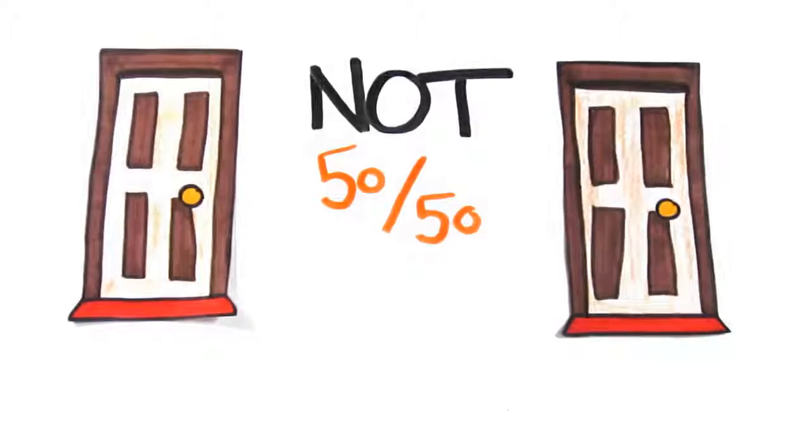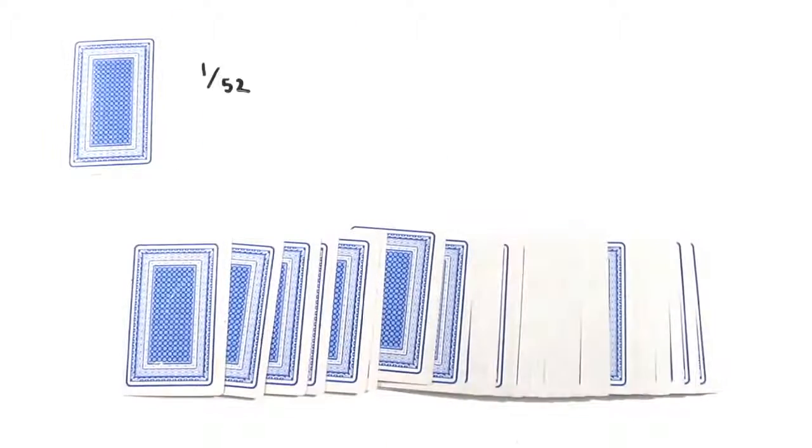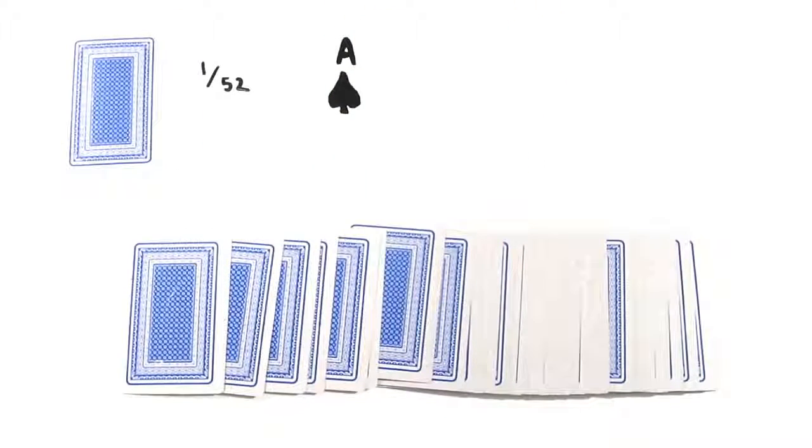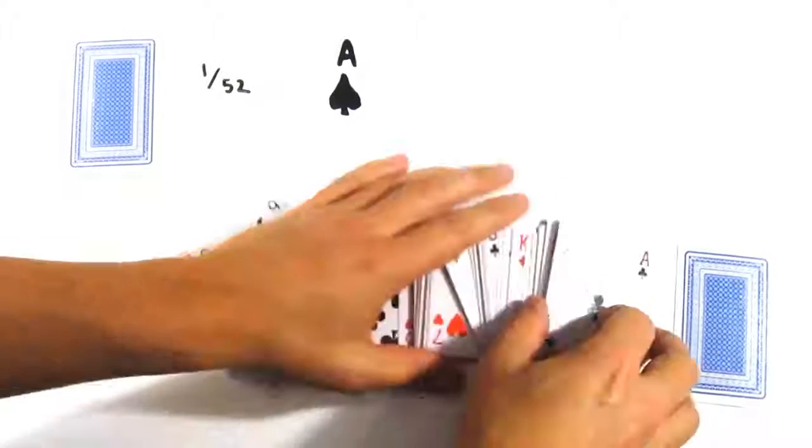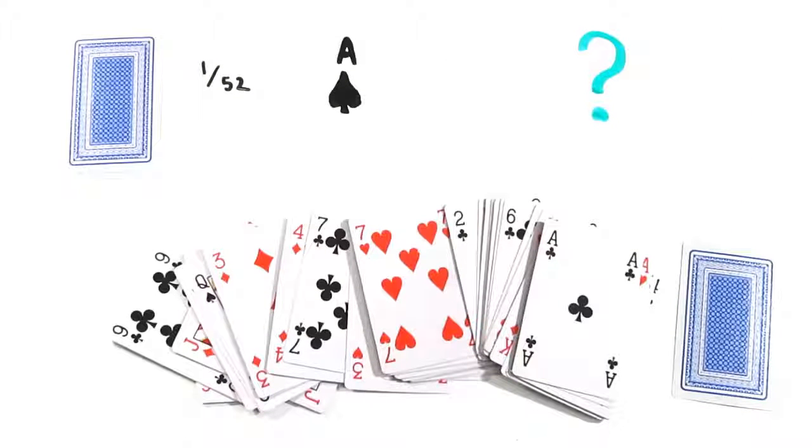Let's use a deck of cards to understand why. Pick a card from this deck without looking. This card has a 1 in 52 chance of being the Ace of Spades, but now I'm going to flip over all the other cards except one, none of which are the Ace of Spades. Of the two cards left,